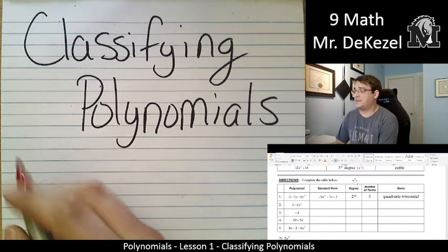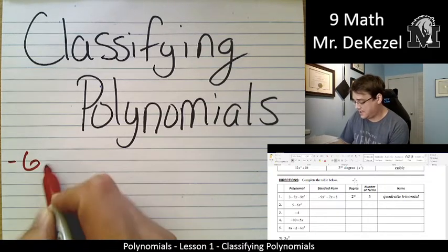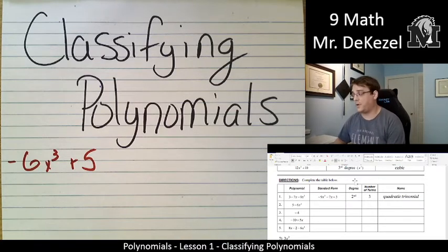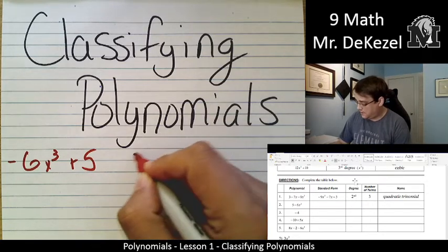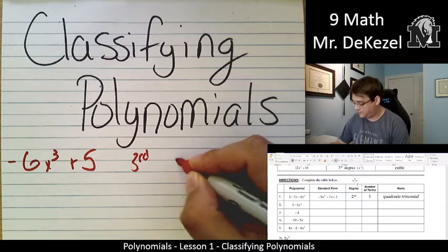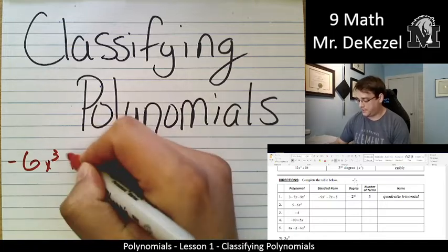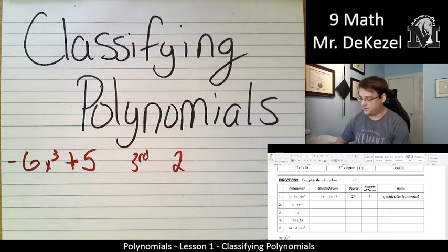5 - 6x³. To write that in standard form, that would be -6x³ + 5. So, from left to right, the highest exponent first. It is third degree. The highest exponent is 3, so we call that third degree. There are two terms in this one, separated by a positive sign, or in the first case, a negative sign.